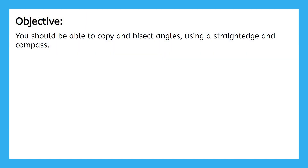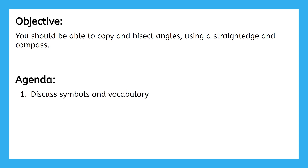By the end of this lesson, you should be able to copy and bisect angles using only a straight edge and compass. First, we'll discuss any new symbols and vocabulary used in this lesson. And then, you'll complete a three-part activity for practice on your own after this video's over.